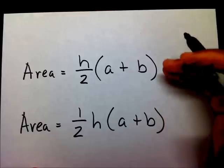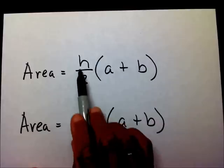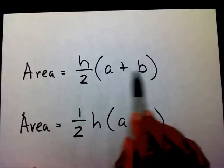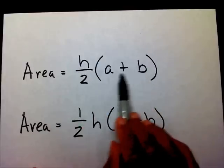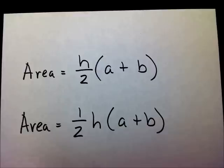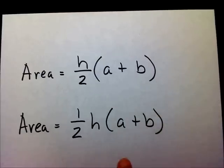It just depends on which way you want to write it. I just prefer this method because you take your height, you divide by 2, and you add the a and your b, and you multiply them together. So, let's try one.